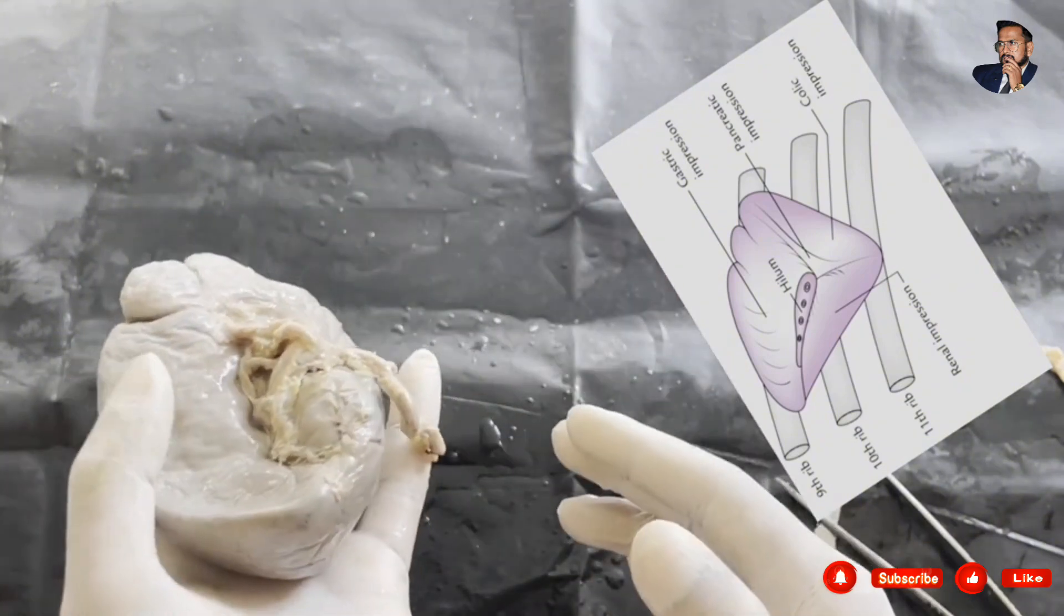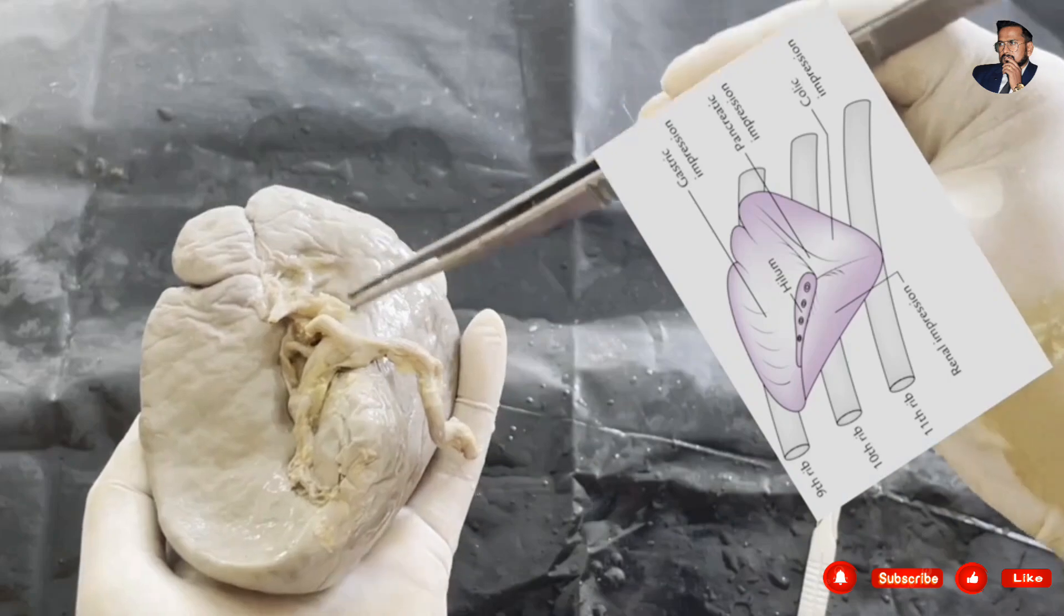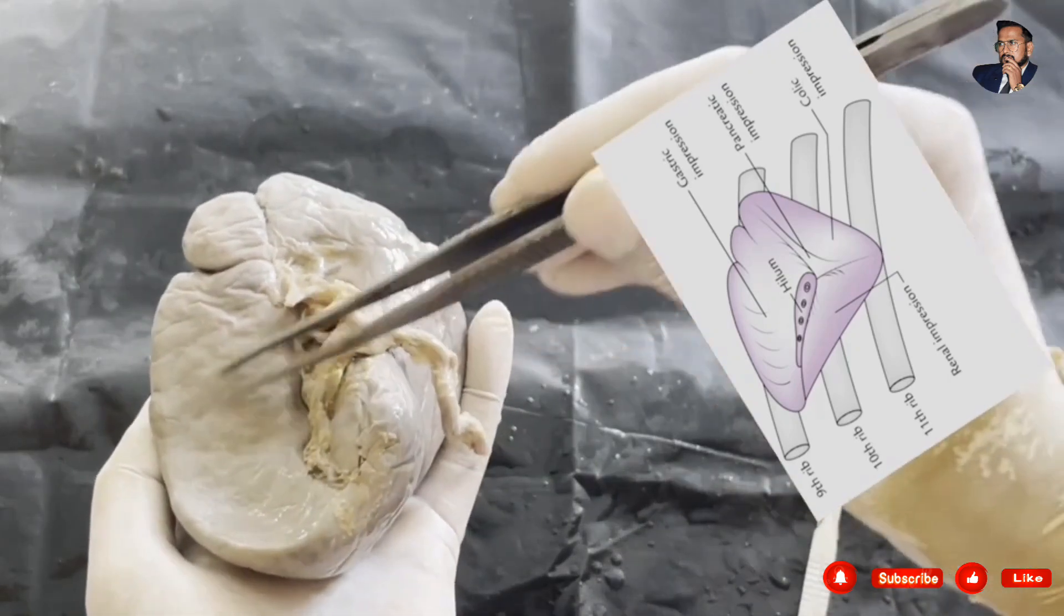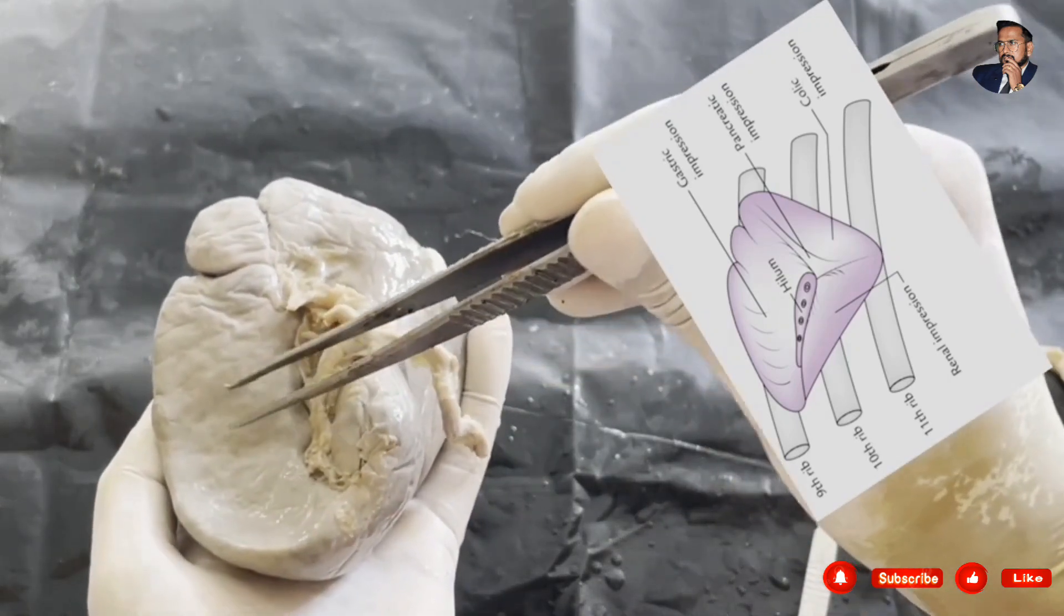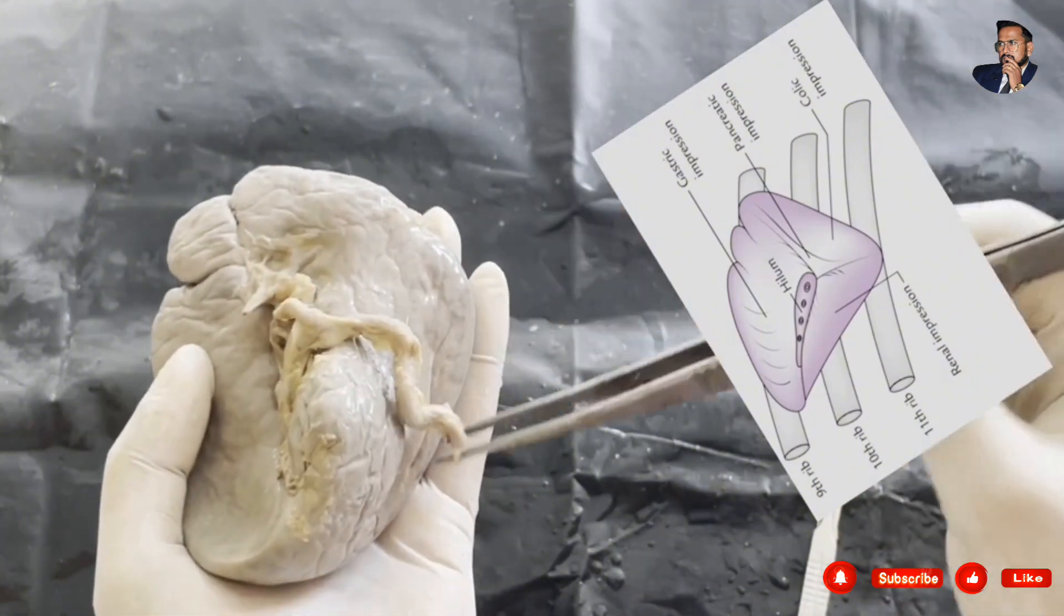We have the visceral surface. This is the superior border. This is intermediate border. Between the superior and intermediate border we have gastric impression for the stomach. This is the inferior border.